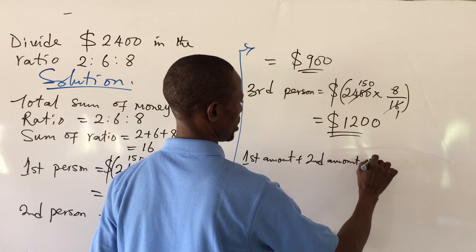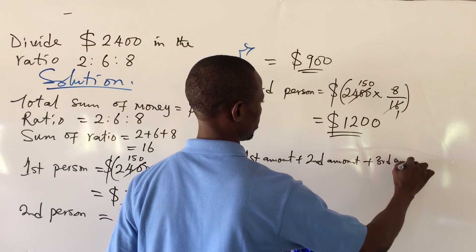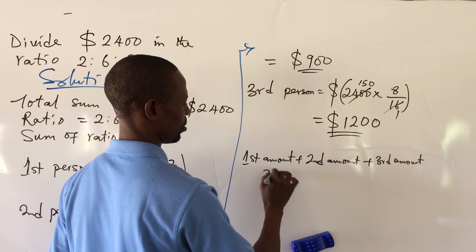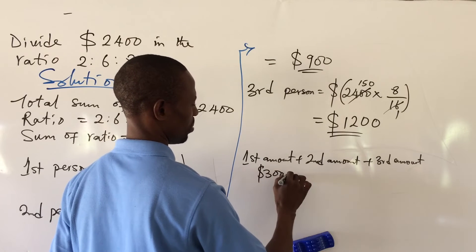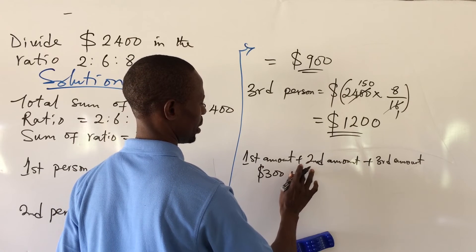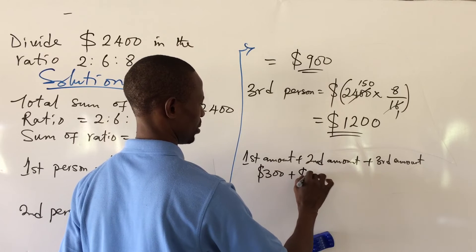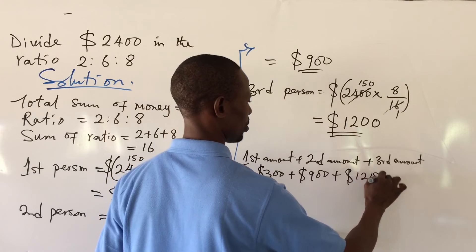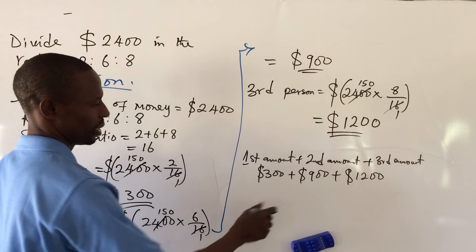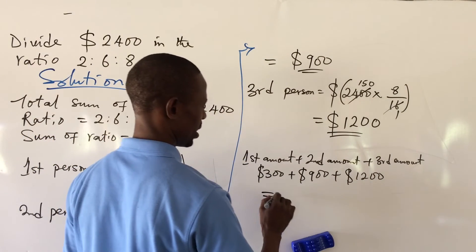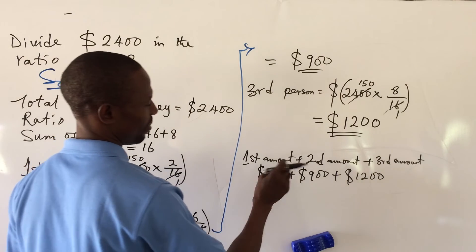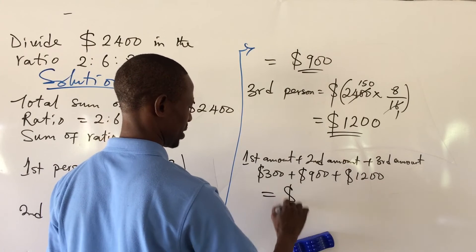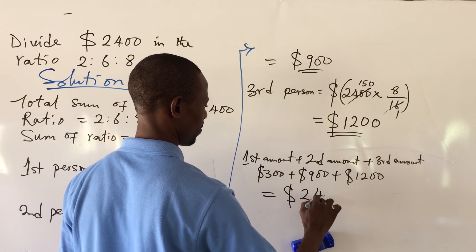This will give us $300 plus $900 plus $1200. This gives us the needed amount here. We have $1200 plus $1200, so automatically we have $2400. Approved.